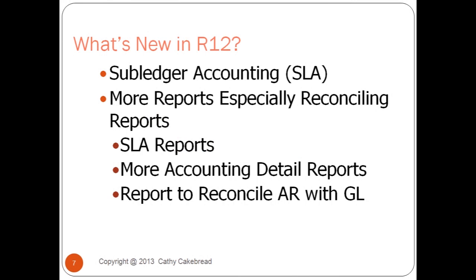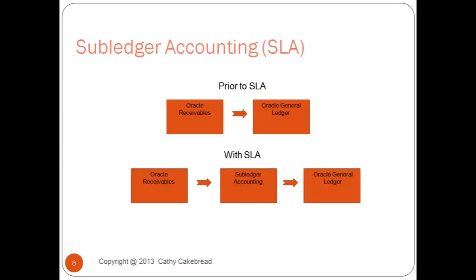One of the main differences in Release 12 is this underlying concept called subledger accounting, or SLA. SLA is a different way of storing your accounting information. In the past, your accounting details were carried within various tables in Oracle Receivables, and then you passed that information as journal entries to the general ledger.